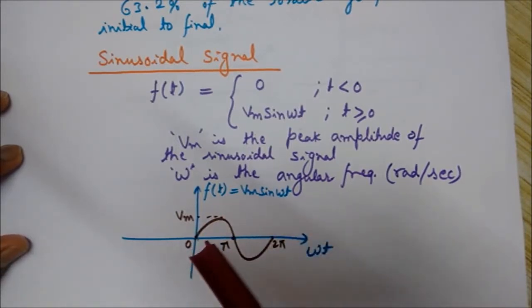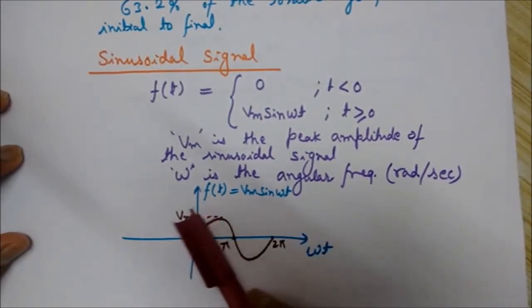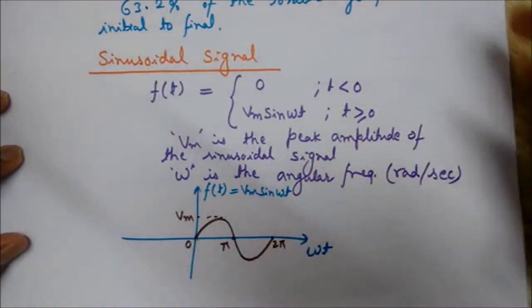More generally, the value is zero at nπ (0, π, 2π, 3π, etc.), and Vm is the maximum value of this signal.